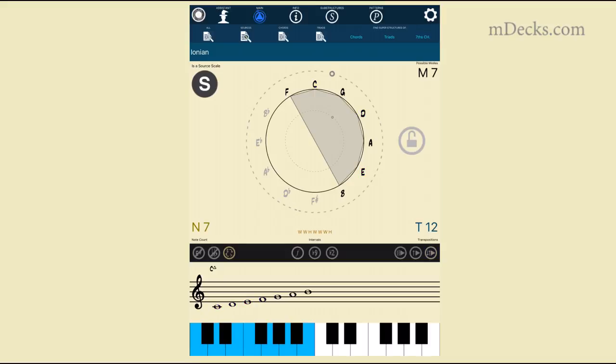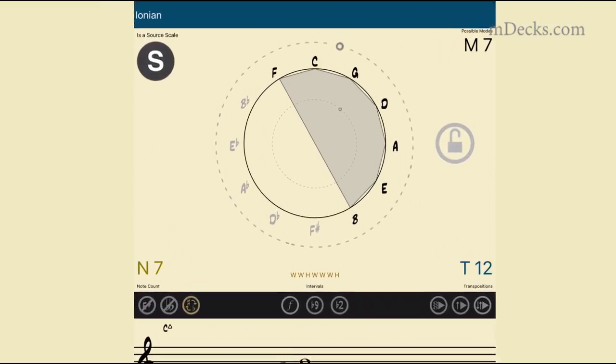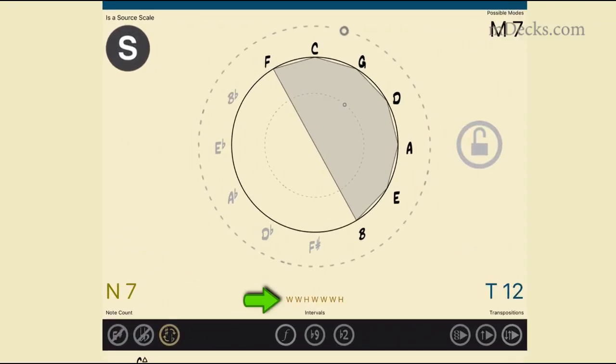We can also look at the intervals that we get if we play the scale in ascending order. These are whole, whole, half, whole, whole, whole, half.